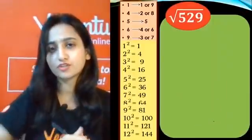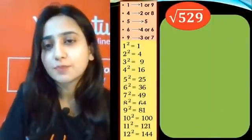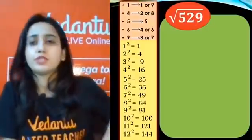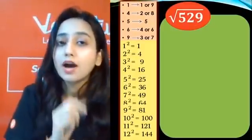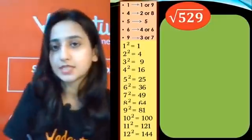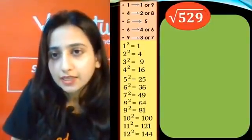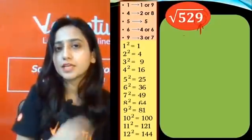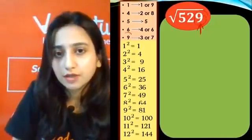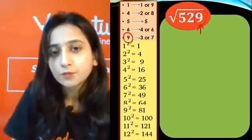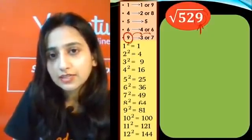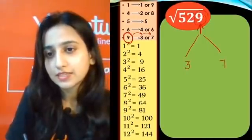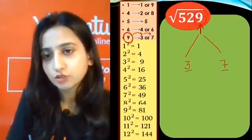Let's look at the first question: square root of 529. Step one — look at the unit place, which is 9. Refer to the table: if the unit place is 9, then the answer unit digit will be 3 or 7. So in the answer, it will be either 3 or 7.